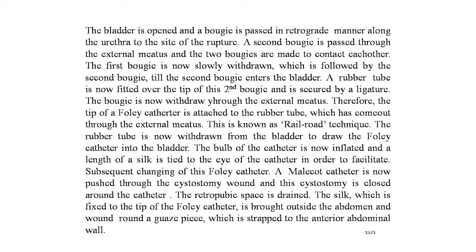The bladder is opened and a bougie is passed in a retrograde manner along the urethra to the site of rupture. A second bougie is passed through the external meatus toward the perineum, and the two boogies are made to contact each other. The first bougie is slowly withdrawn, followed by the second bougie with both hands of the surgeon, until the second bougie enters the bladder. A rubber tube is fitted over the tip of the second bougie and secured by ligature; the bougie is then withdrawn through the external meatus. This is known as the railroad technique.